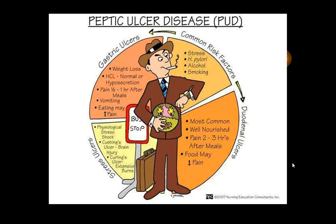Peptic ulcers include gastric, stress, and duodenal ulcers with different risk factors: stress, alcohol, smoking, and H. pylori bacteria. Gastric ulcers cause pain within 30-60 minutes of eating due to increased secretions; duodenal ulcers cause pain 2-3 hours after eating when acid gets dumped into the duodenum. Stress ulcers include Cushing's ulcers (from brain injury) and Curling's ulcers (from burns) — this is why patients are placed on stress ulcer prophylaxis.